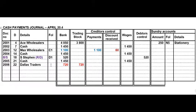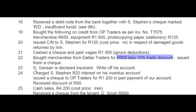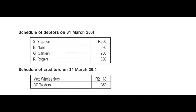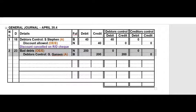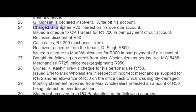On the 23rd, G. Gansen was declared insolvent and we write off his account. G. Gansen owed us 200 rand when the month started, so we write his account off in the General Journal. The account debited is an expense account called Bad Debts; the account credited is Debtors Control — G. Gansen — because we're removing him from the debtors control account. Narration: 'account written off.'